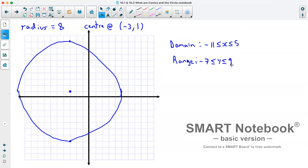What you'll notice is you can get those values without graphing it simply by looking at where our center is and where our radius is. Because if we have negative 3 minus 8, that gives us negative 11. Negative 3 plus 8 gives us our 5. Then to get our range, we look at our y value. So 1 minus 8 gives us our negative 7. 1 plus 8 gives us our 9.